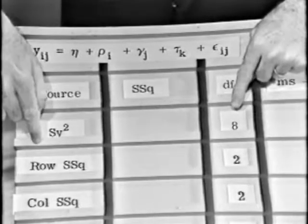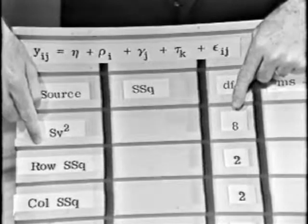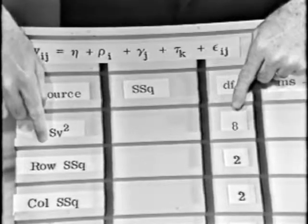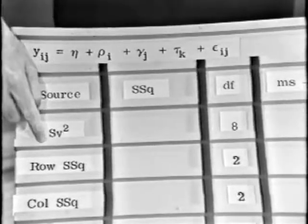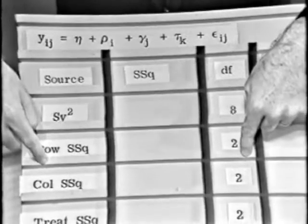So we start out with eight degrees of freedom. Now, there are the row classifications, the locations. And so how many degrees of freedom are there for rows? Two. And then there are two columns,